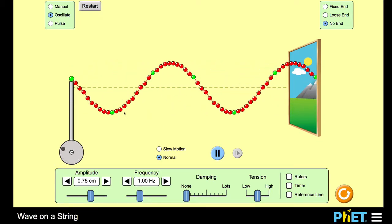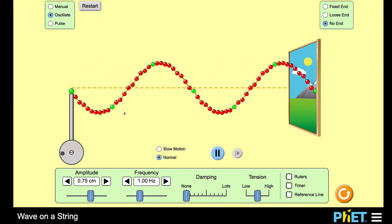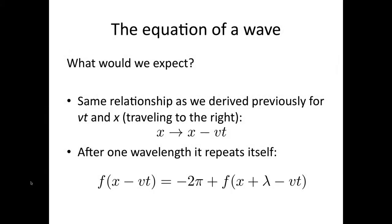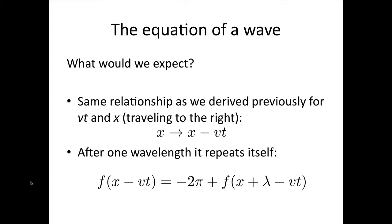Let's stop the simulation now and discuss what we already know. So what we're going to do is derive an equation to describe the wave. We'd expect the same relationship as we derived previously for vt and x — so if it's traveling to the right, then x becomes x minus vt.